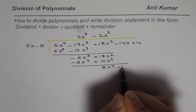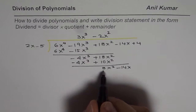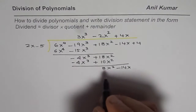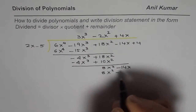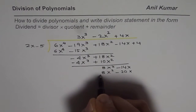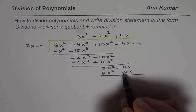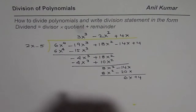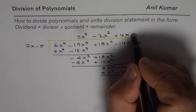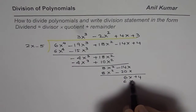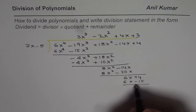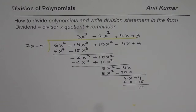Bring down minus 14x. To handle 8x squared, we multiply by plus 4x, giving 8x squared minus 20x. Taking away gives 6x. Bring down plus 4. Dividing 6x by 2x gives plus 3. Then 3 times 2x is 6x, and 3 times minus 5 is minus 15. The remainder is 4 minus minus 15, which is plus 19. So the remainder is 19.